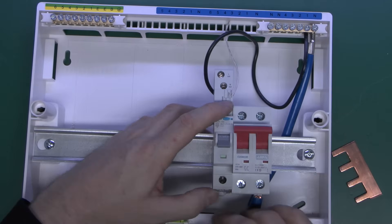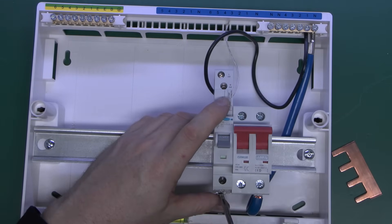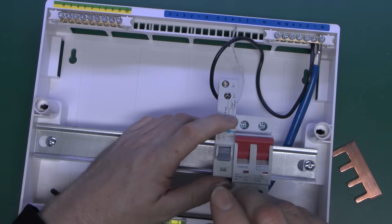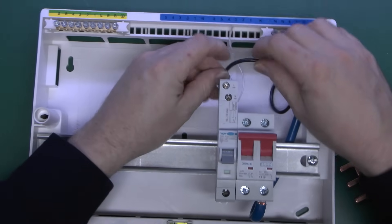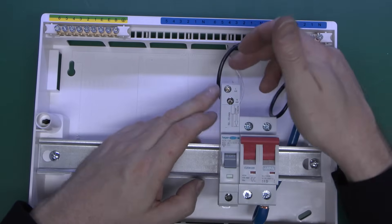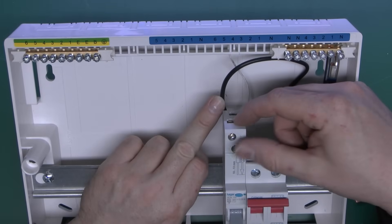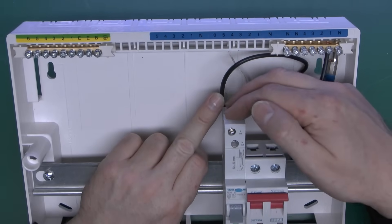So this just fits on the rail here and then your circuit wiring goes in the top here on the line and neutral holes in the actual device.